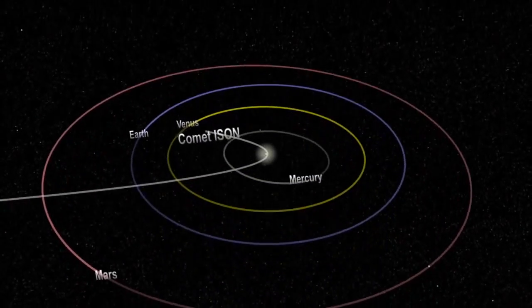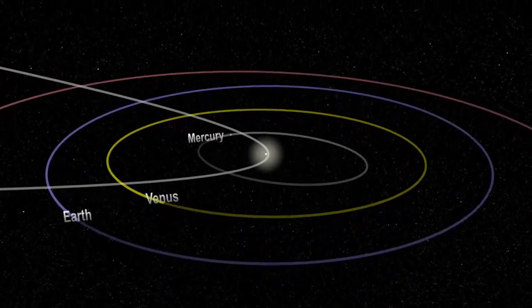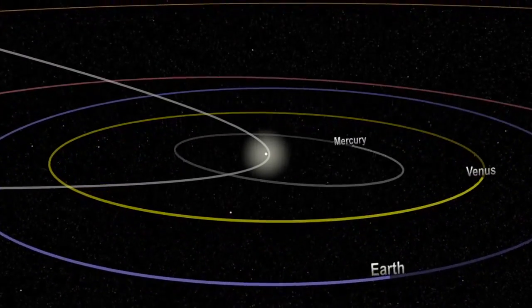Before it does so, it will pass within about 40 million miles from Earth on December 26, assuming it survives its trip around the Sun.